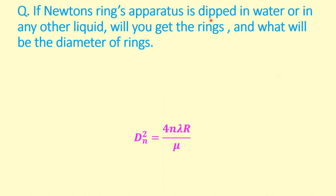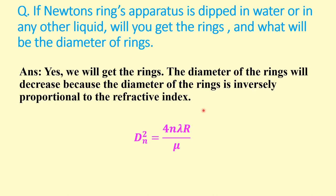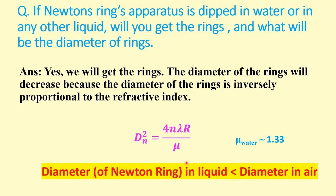If the Newton's ring apparatus is dipped in water or any liquid, will you get rings and what will happen to the diameter? Yes, we will still get rings. But the diameter of the rings will decrease because of the modified formula: D_n squared equals 4n·lambda·R divided by mu. Since mu for water is approximately 1.33 and for any liquid it is greater than 1, the value of D_n squared will be less in liquid compared to the diameter in air.